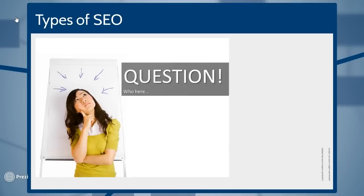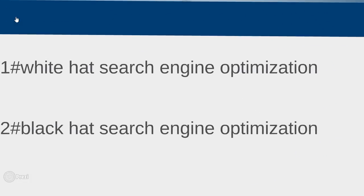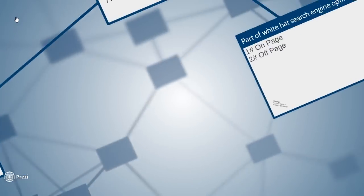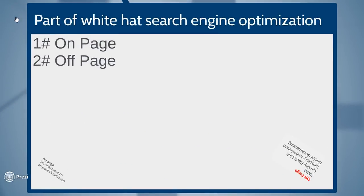We will learn the types of SEO. There are two types of SEO: black hat and white hat. We will cover these in the next video.